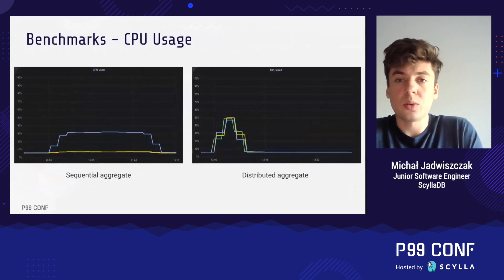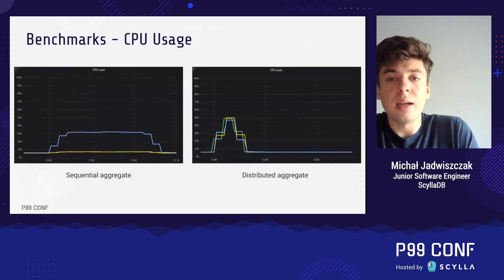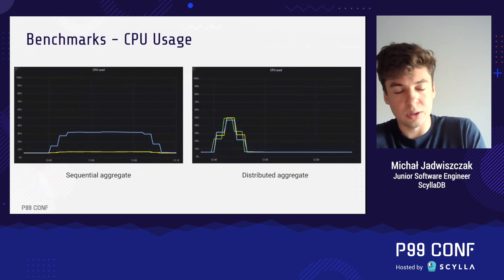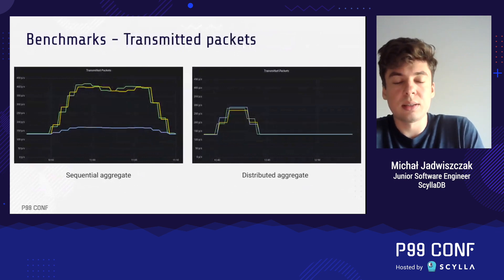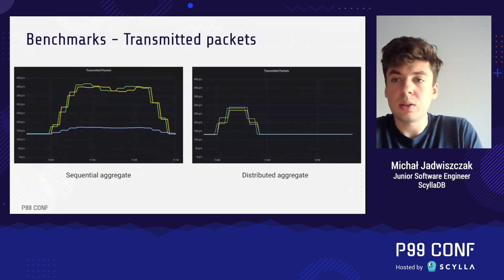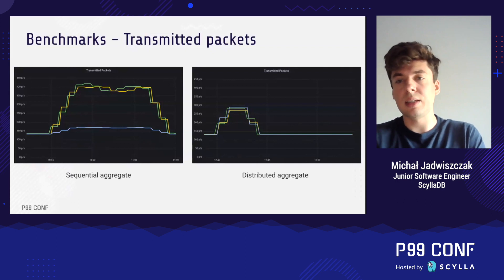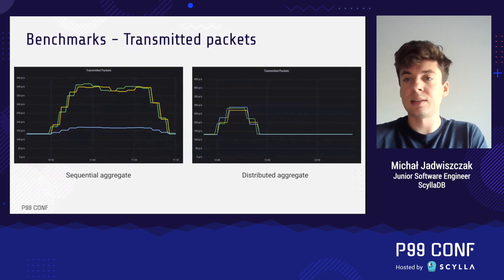Finally, here are some graphs. The CPU usage graphs clearly show that the workload is distributed across nodes in a much shorter period. The network transmission graphs show that in the non-distributed case two nodes are sending large amounts of data to the coordinator node. In the distributed case, all nodes send much less data over a shorter period of time.